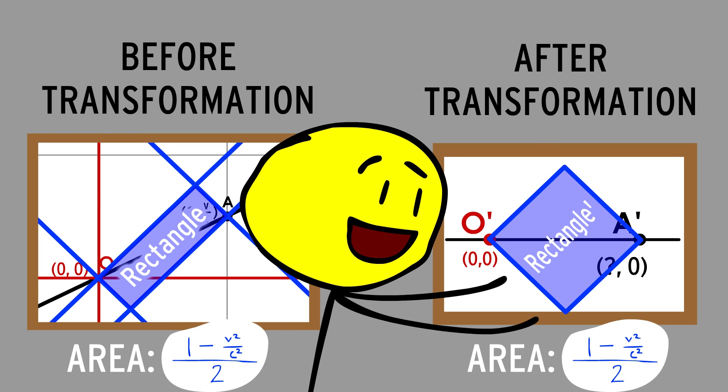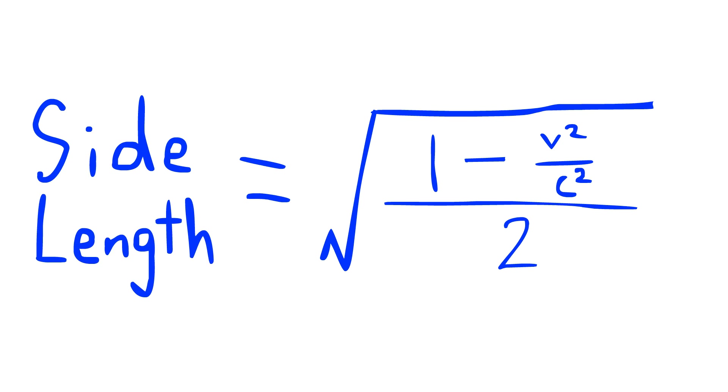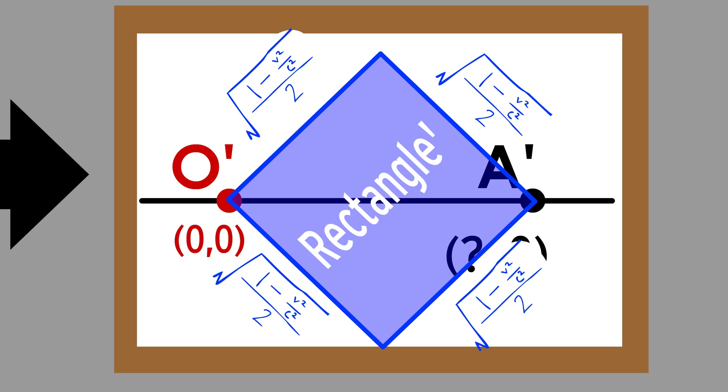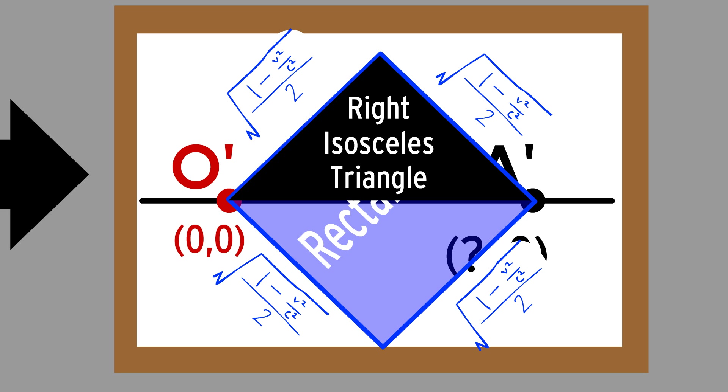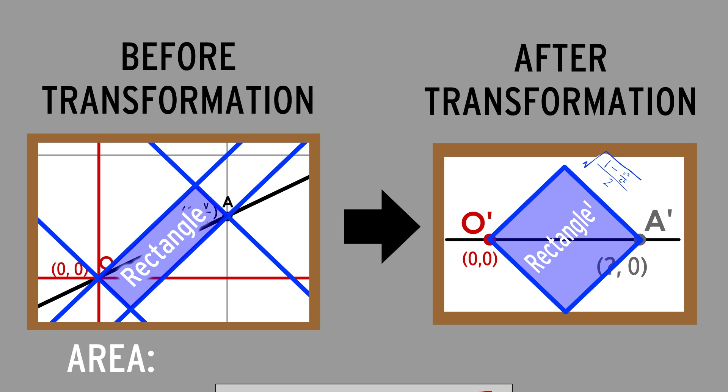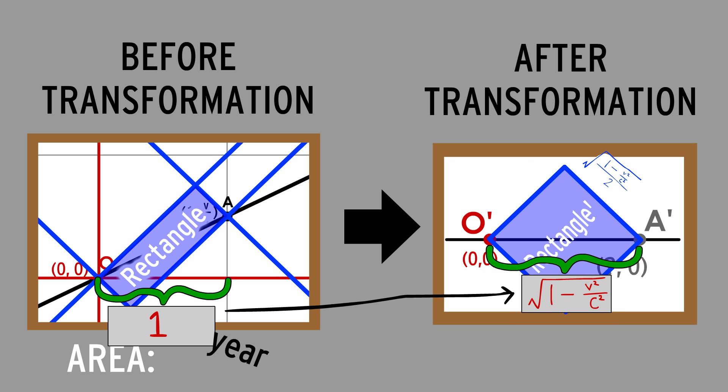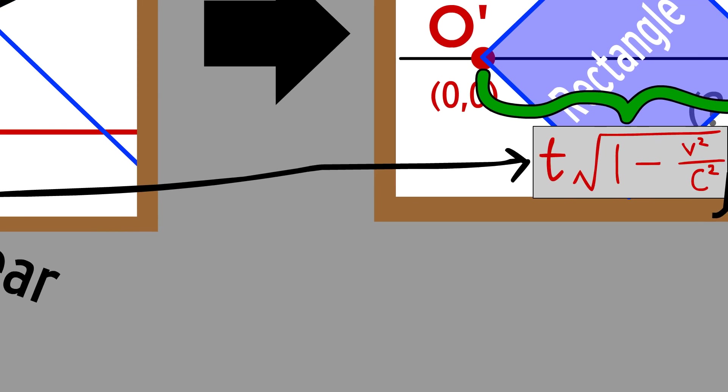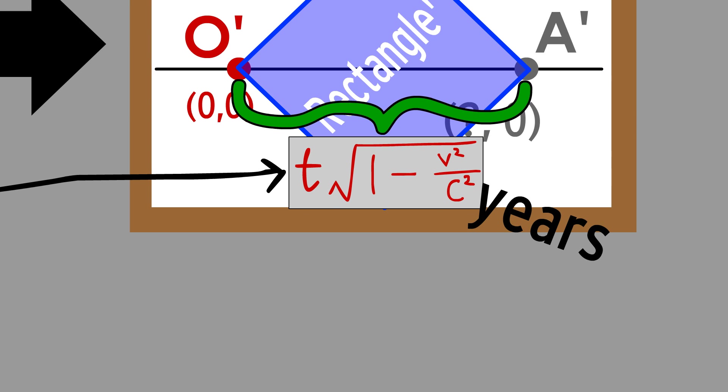Glork. Now we want to find the diagonal length of our square. Again, we find another right isosceles triangle, so we can just multiply this big mess by square root 2, and we get the square root of 1 minus V squared over C squared. That is the horizontal distance, aka time difference, between O prime and A prime. Therefore, the transformation took a time of 1 year and squished it to the square root of 1 minus V squared over C squared years. The whole transformation is linear, which means that for any time t, the end result will be t times the square root of 1 minus V squared over C squared.